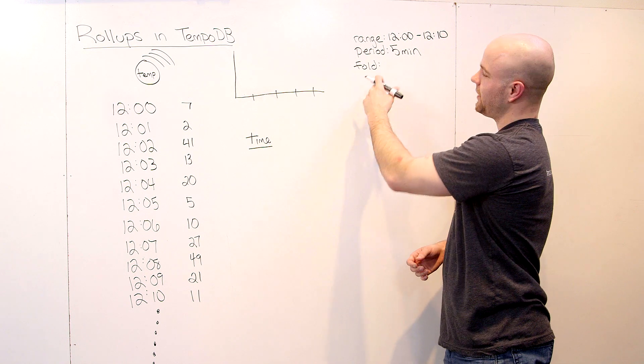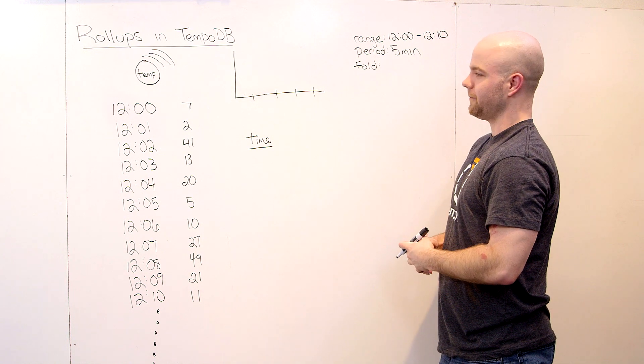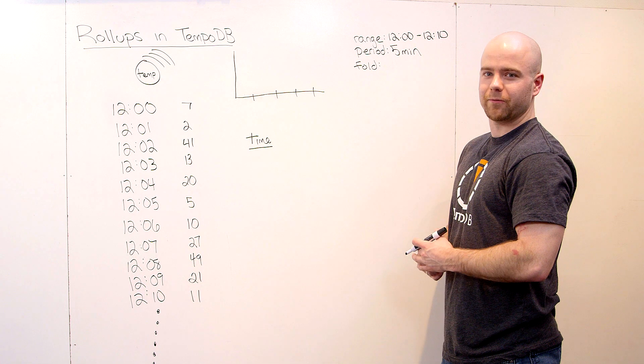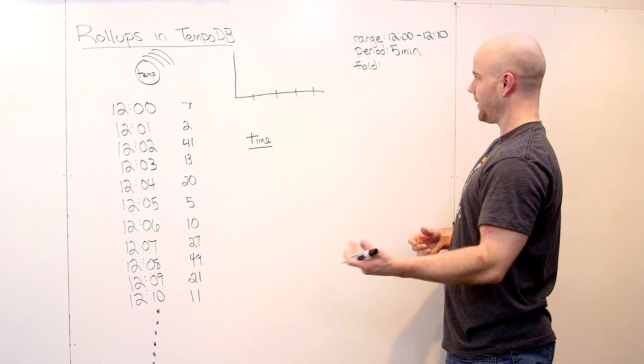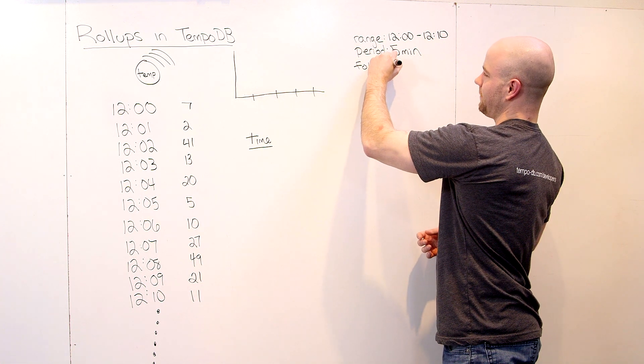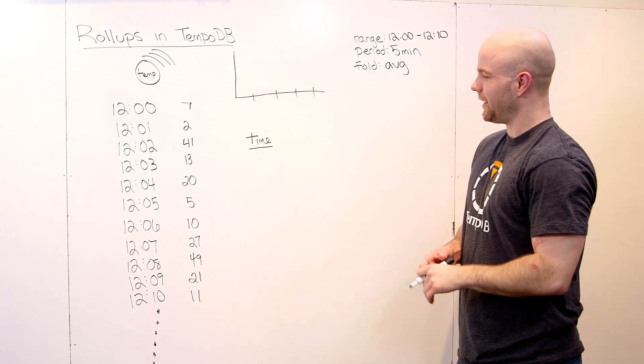Then for fold, this is the analysis function you want to run. Average, min, max, count, some examples of analysis functions we provide. There's a lot of them. But we'll start with average for now.